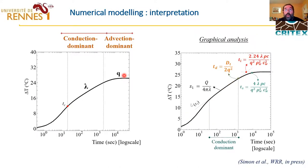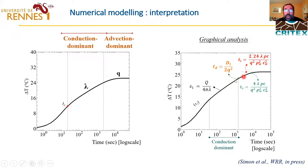We also have another method that consists of a graphical analysis to determine some characteristic times. For instance, the time of departure from the conduction-dominant regime — in the conduction-dominant regime you can deduce the thermal conductivity easily using the slope of the thermal increase through time. And as soon as you have departure from this behavior, you can use this characteristic time, or the intersection time, or the stabilization time — all of these times are related to the groundwater discharge.